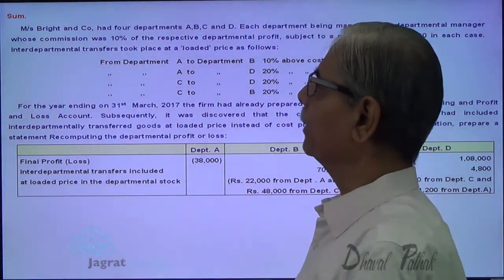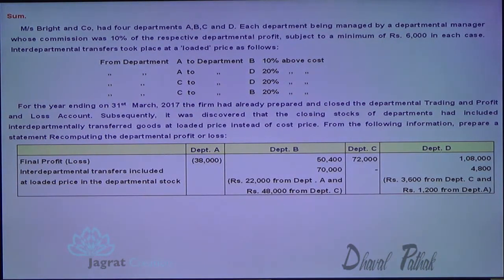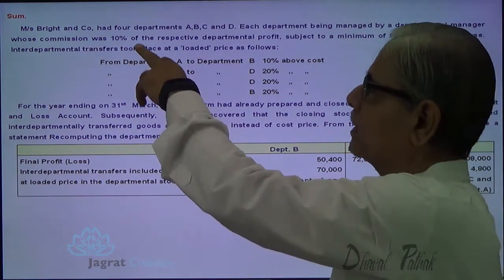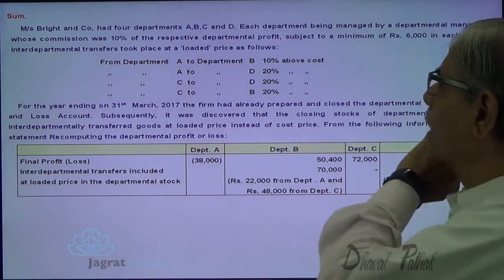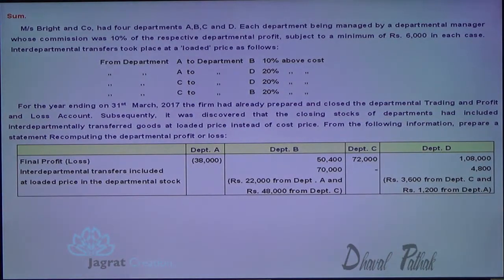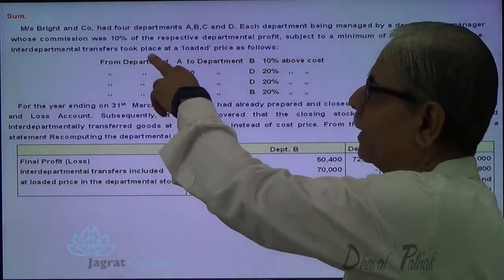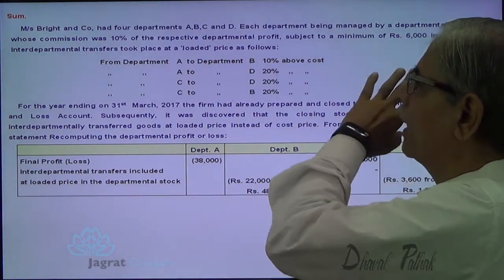Brightland Company has four departments A, B, C and D. Each department is managed by a departmental manager whose commission was 10% of the respective departmental profit, subject to a minimum of Rs. 6,000 in each case. Inter-department transfer took place at a loaded price.